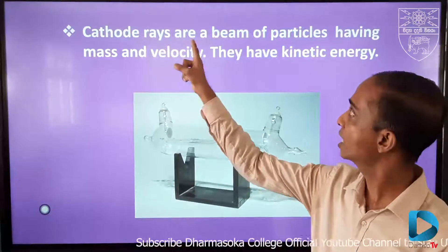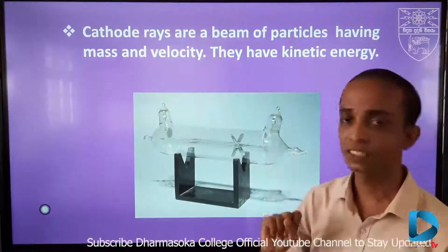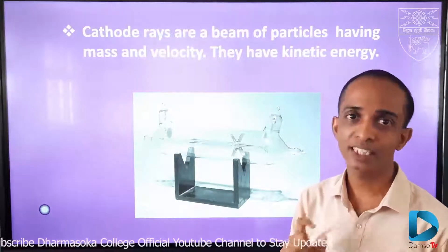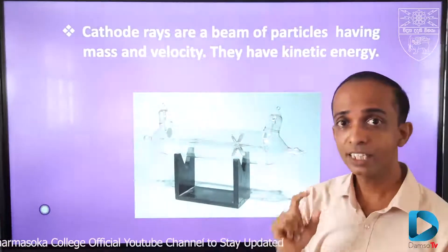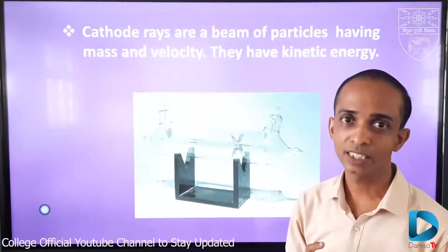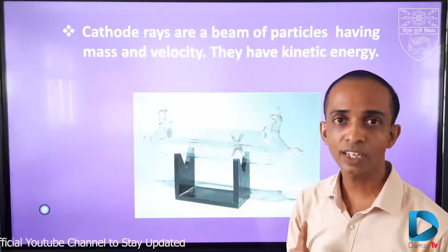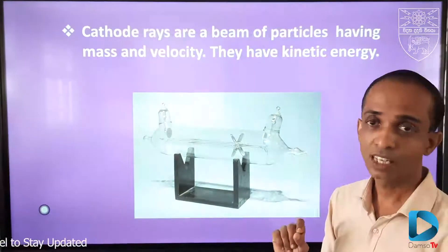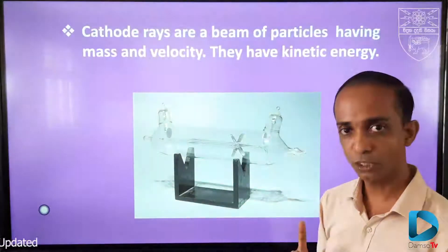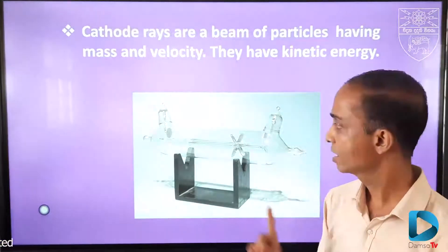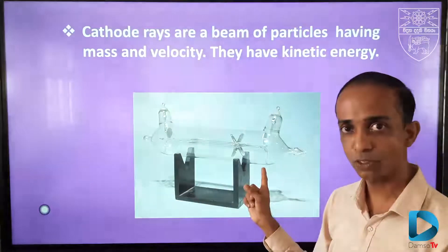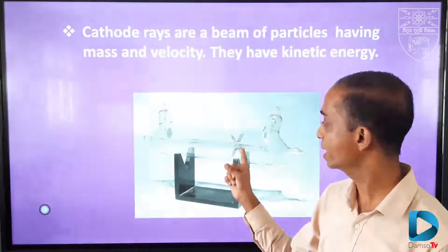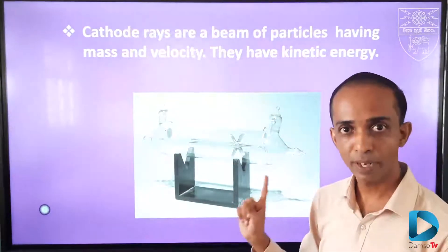Cathode rays are a beam of particles. Actually, cathode rays consist of particles, and these particles have velocity. That means cathode rays have kinetic energy. This property we can check by using this type of tube with a paddle wheel.